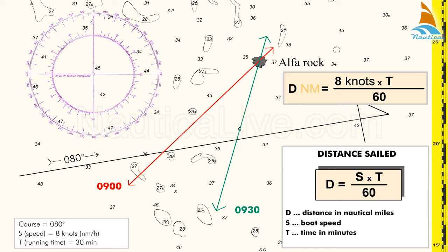In our case, 8 knots times 30 minutes divided by 60 equals 4 nautical miles.